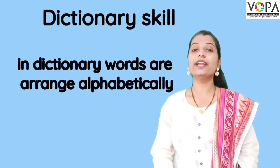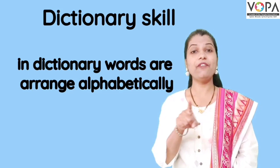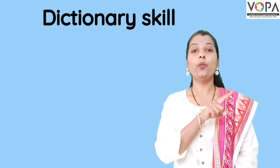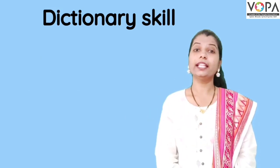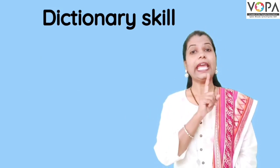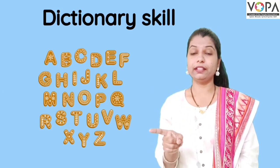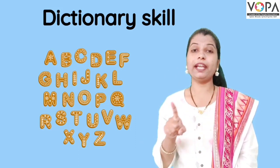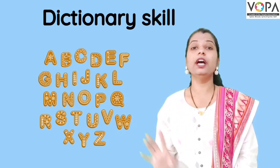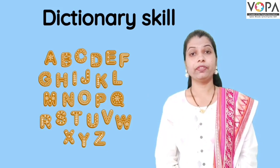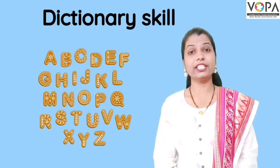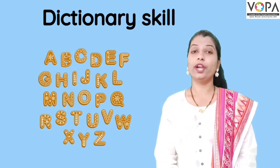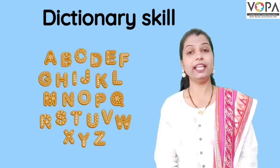In dictionary, words are arranged alphabetically. Dictionary madhe shabda he varna nukra me maanye lele astat. The alphabetical order followed is: a, b, c, d, and so on.